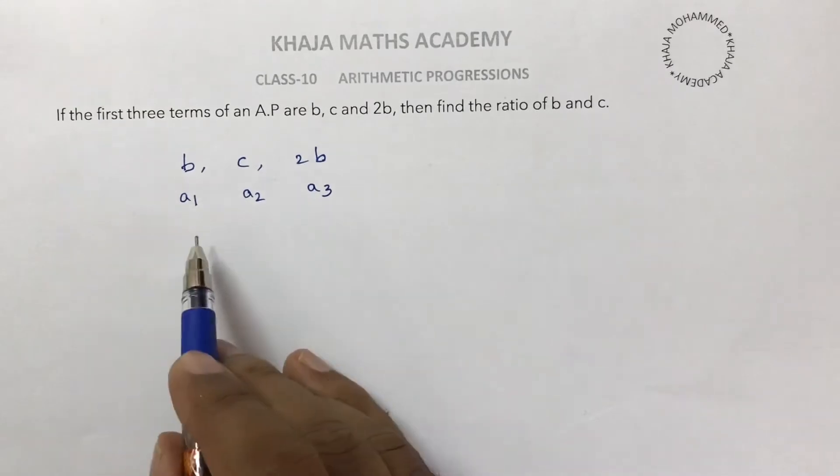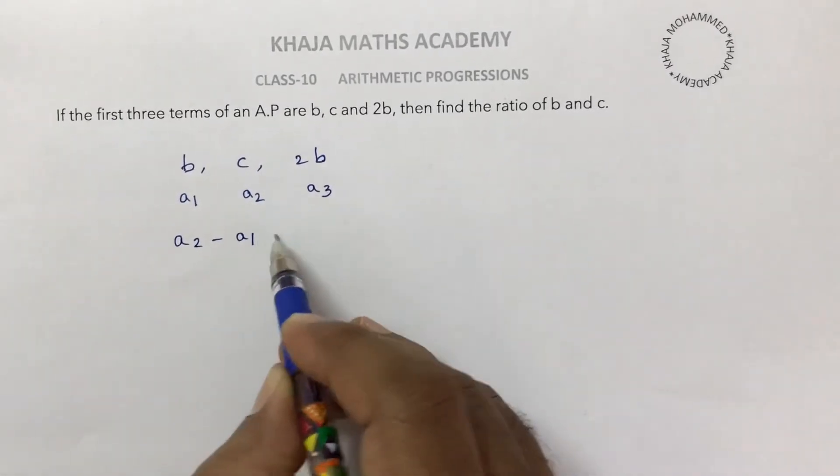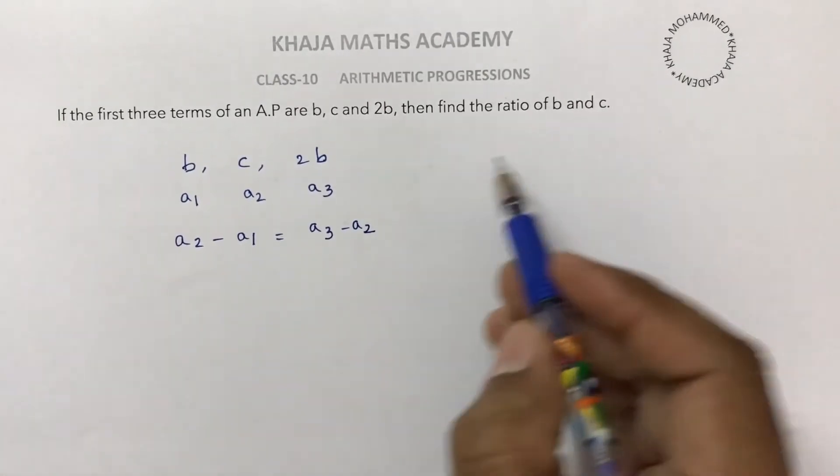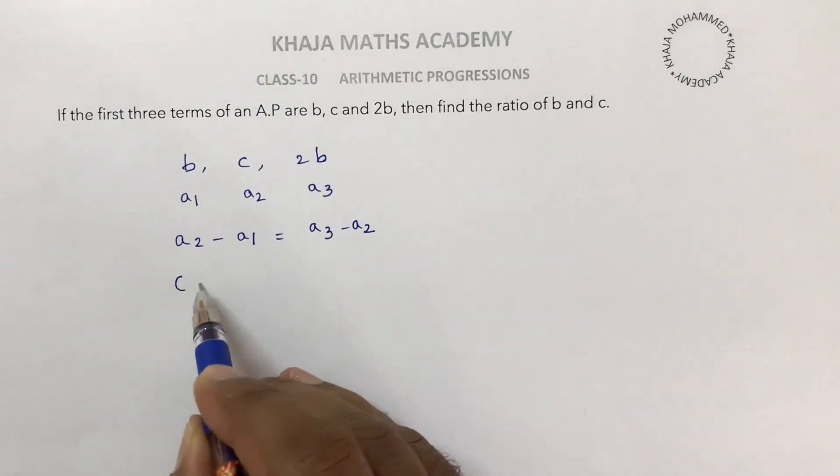If these are three consecutive terms of an AP, then a2 minus a1 will be equal to a3 minus a2. We need to find the ratio of B and C, so just substitute the values. a2 is C minus...